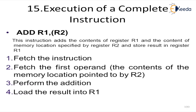Let us understand the execution of a complete instruction with the help of one command: ADD R1, [R2]. Here there are two variables, R1 and R2. Now R2 is in brackets, meaning it is indirect — really pointing towards a memory location. The instruction adds the contents of register R1 and the contents of the memory location specified by R2, and stores the result in register R1. When a bracket is given, it indicates pointing towards the memory location where the contents are stored. You fetch the instruction, fetch the first operand — the content of memory pointed to by R2 — perform the addition, and load the result into R1.